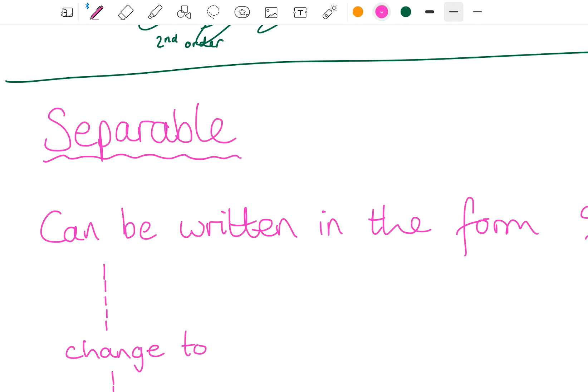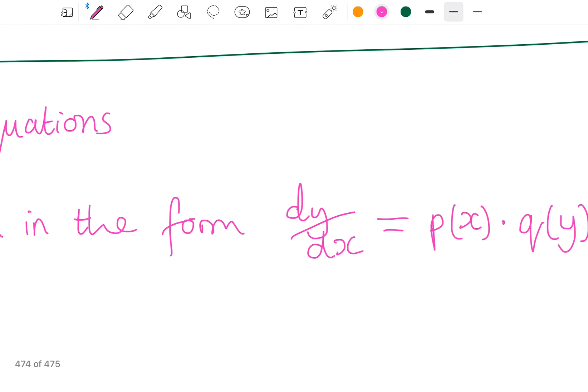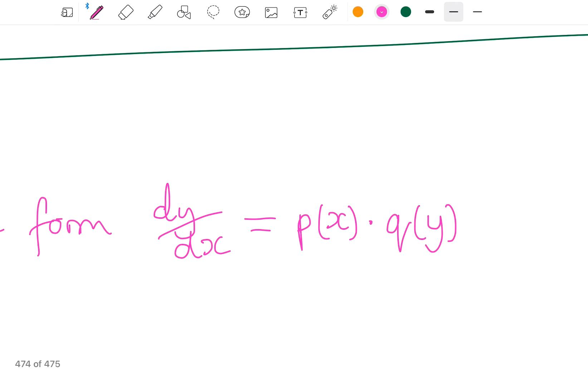So the first one is a type of differential equation. And these are separable equations, and these are ones that can be written in the form dy by dx equals some function of x multiplied by some function of y.